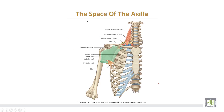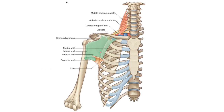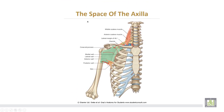This is the space of the axilla. It is a pyramidal shaped space with the apex upward directed towards the neck, the base downwards, the anterior wall, the posterior, medial, and lateral walls.